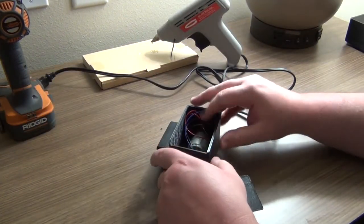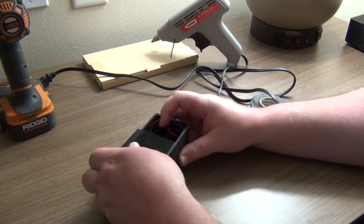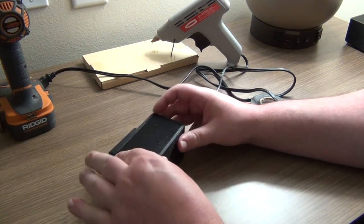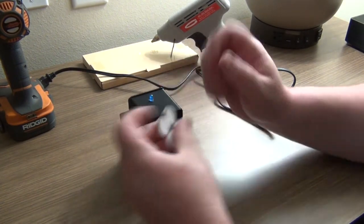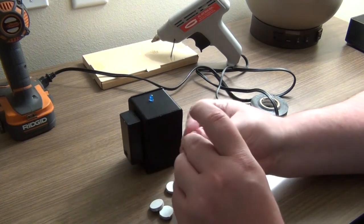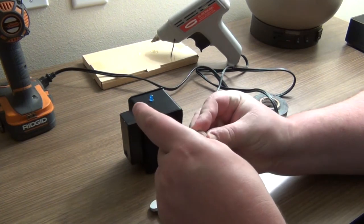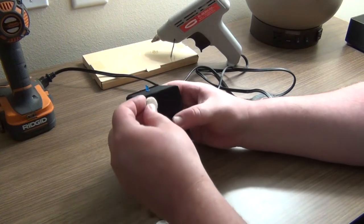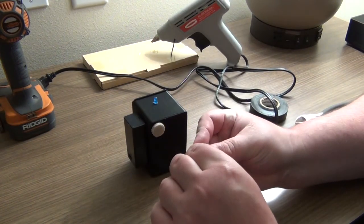Alright, and now, you just seal it shut however your box works. Mine has this slide top. I like to be able to access it easily in case anything ever happens. We'll put on our felt pads here, which you can find at a hardware store. They're usually, these in particular, are used for like cabinet doors. So they don't slam shut. Put one on each corner.